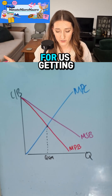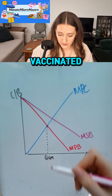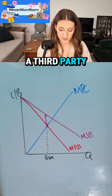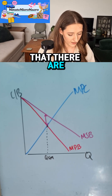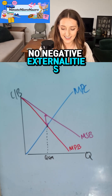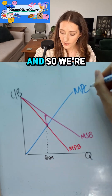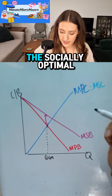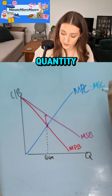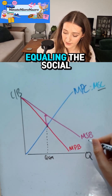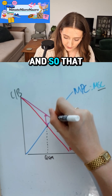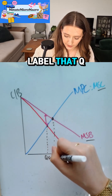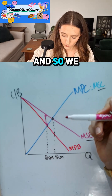So the social benefit is greater than the private benefit. There is a benefit to the third party — our immune-compromised friend — from us getting vaccinated. There is a positive externality to a third party. We're assuming no negative externalities of production, so MPC equals marginal social cost. The socially optimal quantity is determined by social cost equaling social benefit.